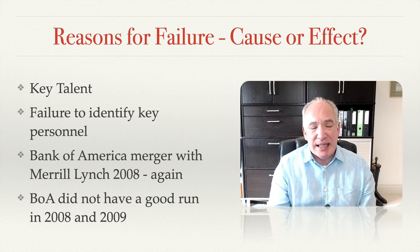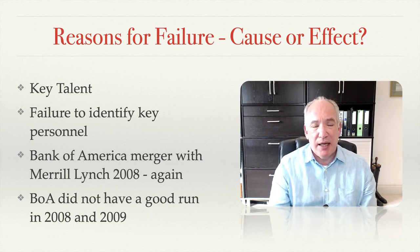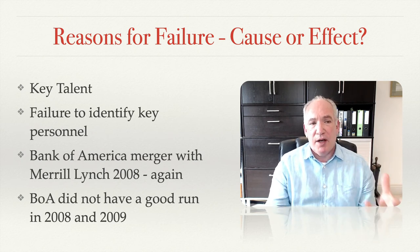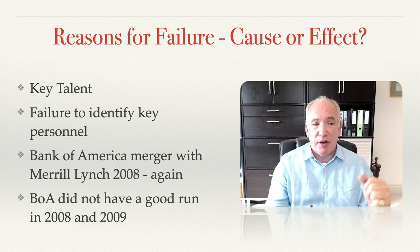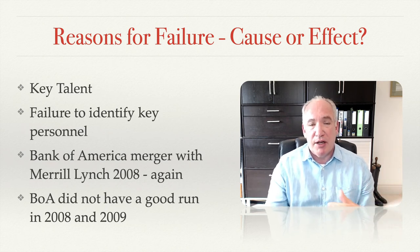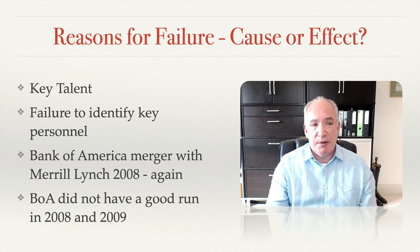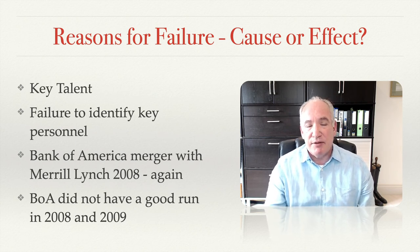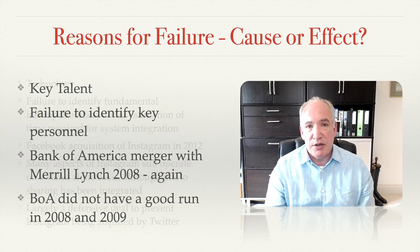Losing key talent is a major problem when you fail to identify key personnel. In the Bank of America–Merrill Lynch merger, key roles weren't identified and people left as a result — those rainmakers were where much of the revenue and profitability came from. All in all, one can say with little chance of contradiction that Bank of America did not have a good run in 2008 and 2009.